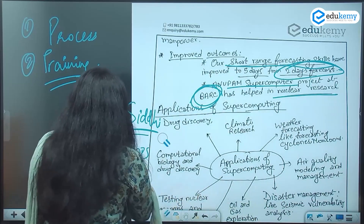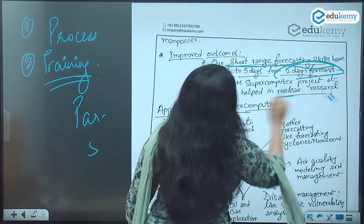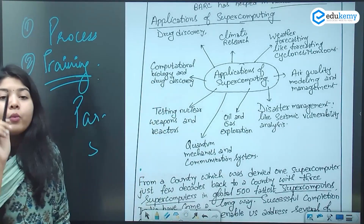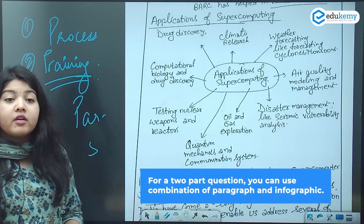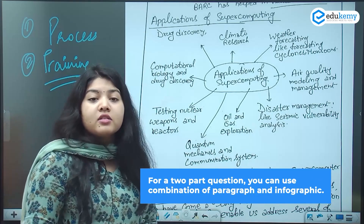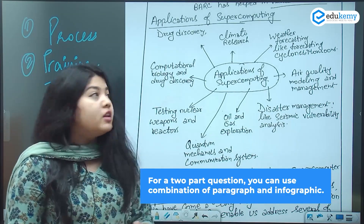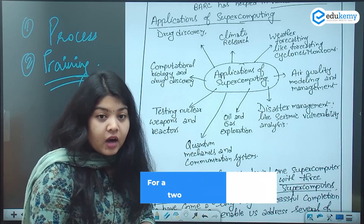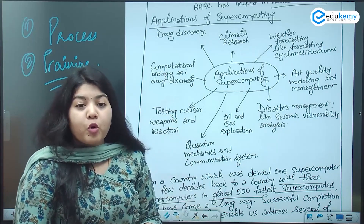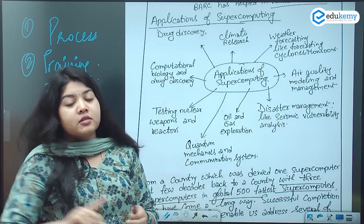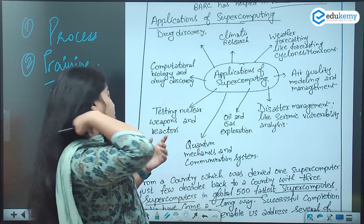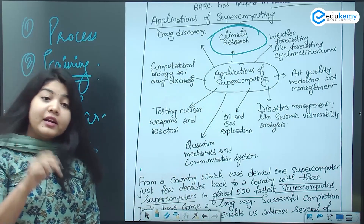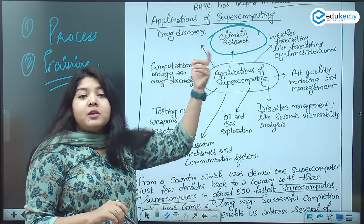These are now the applications which form the second part of the question. The HubSpoke model has been used here. Where can supercomputers be used? Drug discovery during COVID — why were Western countries able to come up with vaccines earlier? Because they have supercomputers which help them in coming to conclusions. In climate research, your IPCC AR6 report is called the scientific report — even the Nobel Physics Prize has been given to climate scientists. There is a use of supercomputing there.